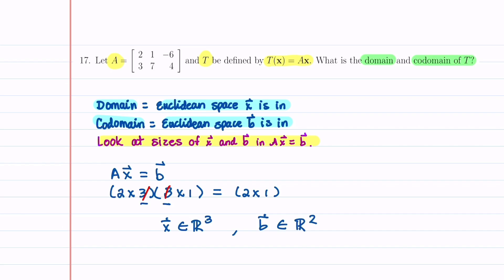Let's go back up here and look at the top. Our domain is the Euclidean space that X is in, and that's equal to R3. So our domain is R3, and then our codomain is the Euclidean space that B is in, so our codomain is equal to R2.